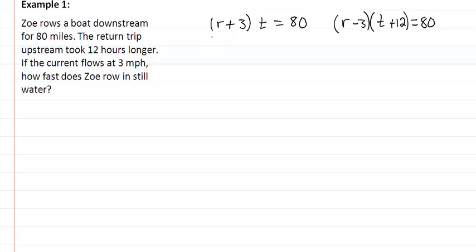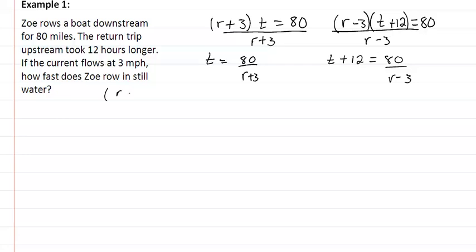We want to know what the rate is, so we are dividing by r plus 3 here and r minus 3 here. So now we have t equals 80 over r plus 3, and t plus 12 equals 80 over r minus 3. I want to point out that r plus 3 and r minus 3 is a difference of squares, which gives you r squared minus 9. You'll probably want to use it in these types of problems because it makes solving them a lot easier.